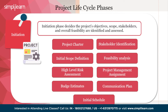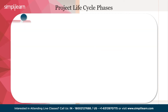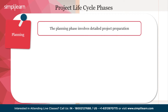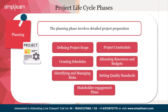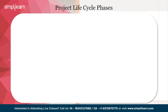The next phase is the planning phase. The planning phase follows project initiation and involves detailed preparation. In this phase, a project manager creates a detailed project roadmap. It includes defining the project scope and constraints, creating schedules, allocating resources and budget, identifying and managing risks, setting quality standards, and establishing stakeholder engagement plans. The outcome is a comprehensive project plan that guides execution, ensures effective resource use, and minimizes uncertainties.